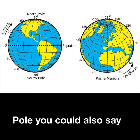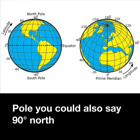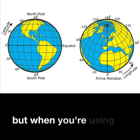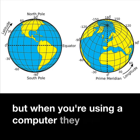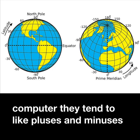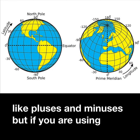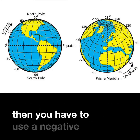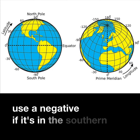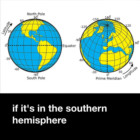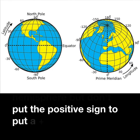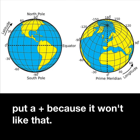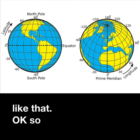You could also say 90 degrees north or 90 degrees south, but when you're using a computer they tend to like pluses and minuses. If you're using D2L then you have to use negative if it's in the southern hemisphere, but don't put a plus sign because it won't accept that.